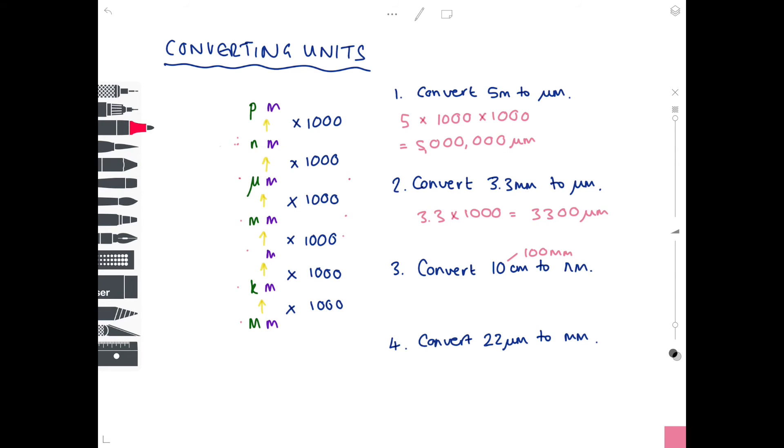And then we're just looking back at our little table thing and we need to see how we're getting from millimeters to nanometers and we're timesing by a thousand twice. And let's just add some little commas to try and make that make more sense. So that's 100 million nanometers.